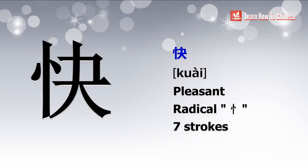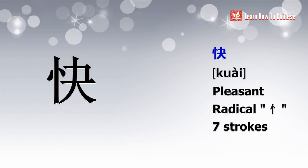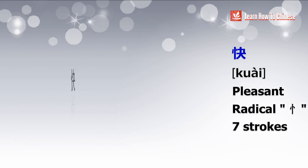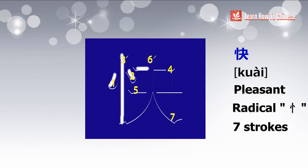Next is 快. The radical is 心, which means heart, and it has 7 strokes. You write it from left to right.